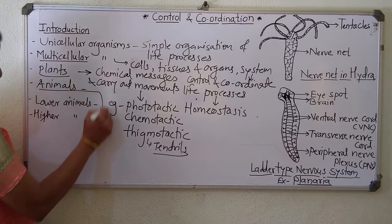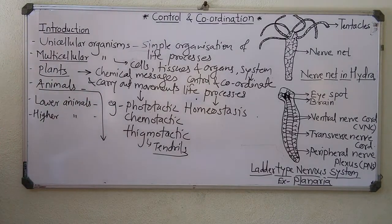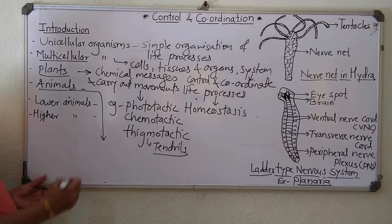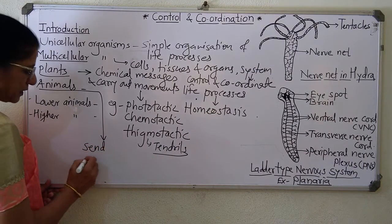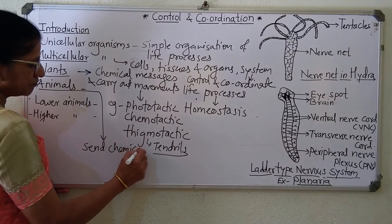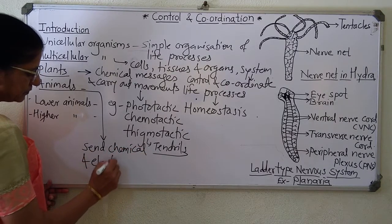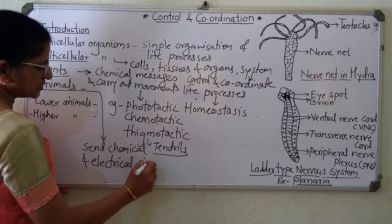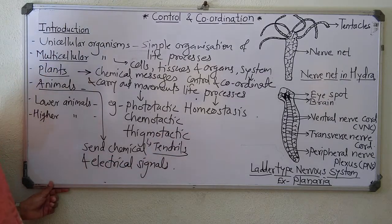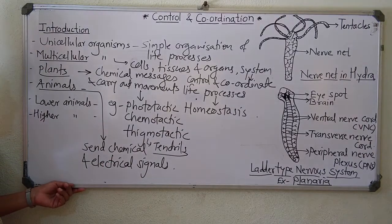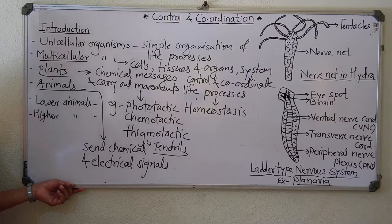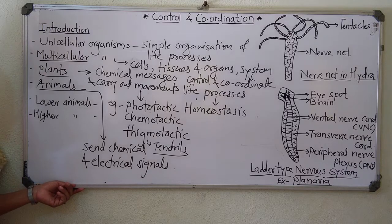In animals, they show control and coordination by sending electrical and chemical signals. Through this control and coordination, with the help of the nervous system as well as the hormonal system, they bring about homeostasis and different life processes.